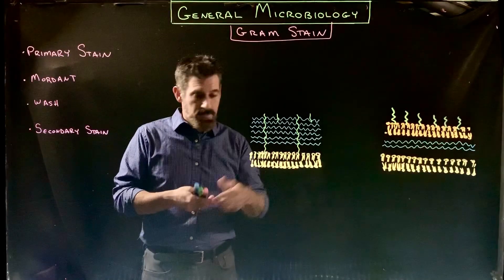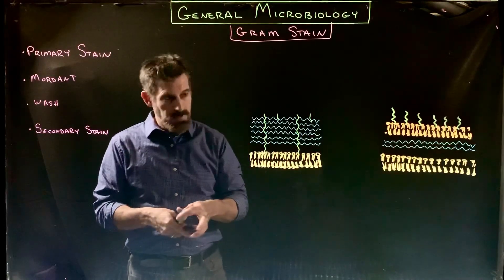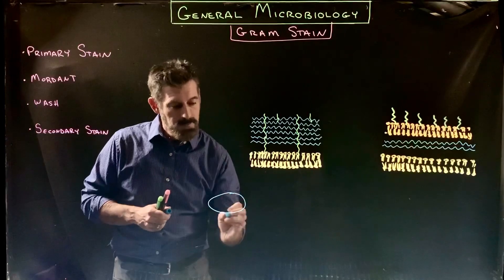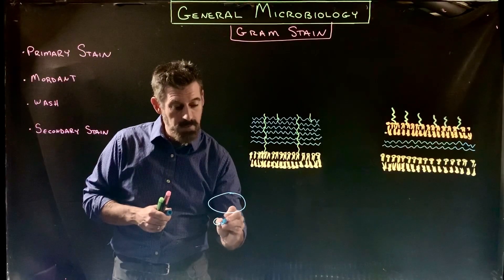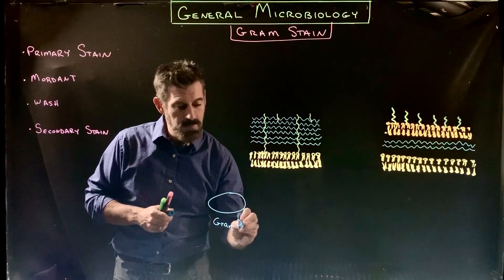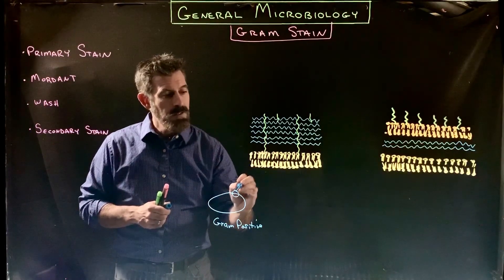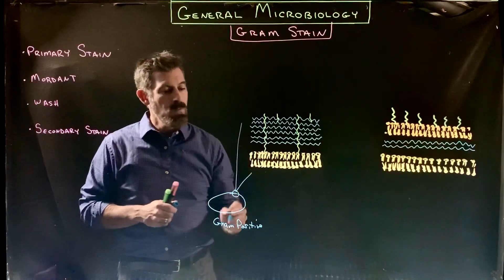The technique is we can pretend that this is a cell, and this is going to be what we're going to be calling a gram positive cell. Here we're going to be looking at a bit of the cell membrane and cell wall.